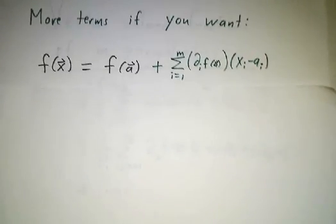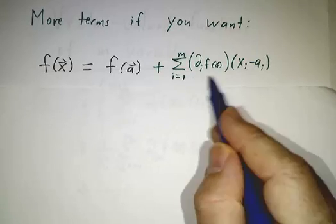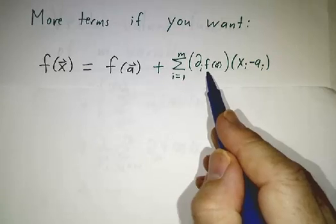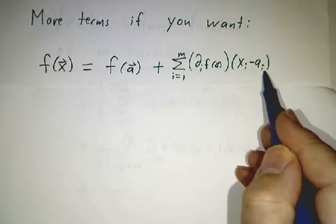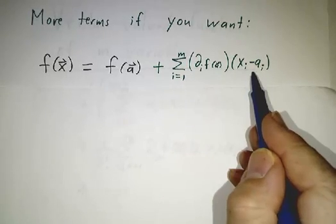Now, we could do more terms. I just wrote the gradient dotted into (x-a) out in coefficients. It's the derivative in the i-th direction times (x_i - a_i). That is the i-th component of (x-a). And then you sum as i goes from 1 to m. So this is the gradient dotted into (x-a).